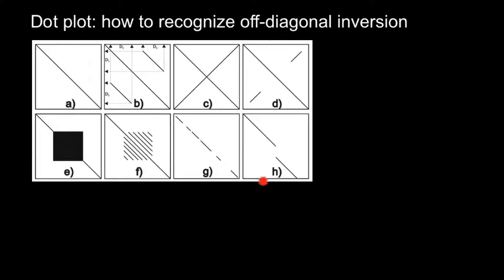This is what you may see — different small fragments may look like anything on this picture. I already explained what we see on pictures A, B, E, F, G, H, and D. Picture D is a representation of inversion, and in this case this is duplication and inversion.